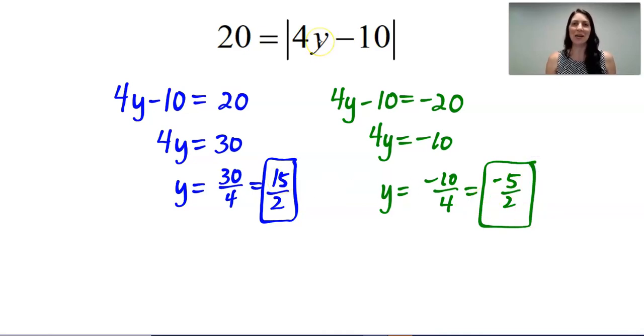Once again, you can always check your work by plugging your solution back into the original equation to check. And once again, notice it was the 20 that was positive and then negative. It was not this sign right here that changed when I rewrote it into two equations.